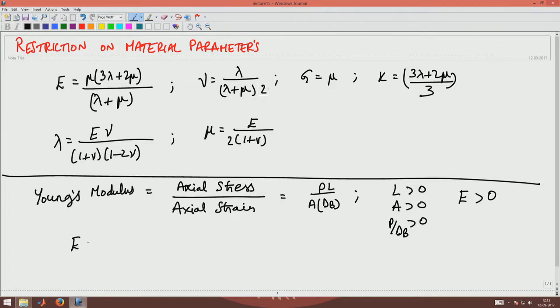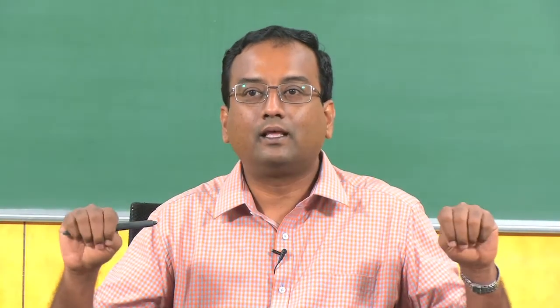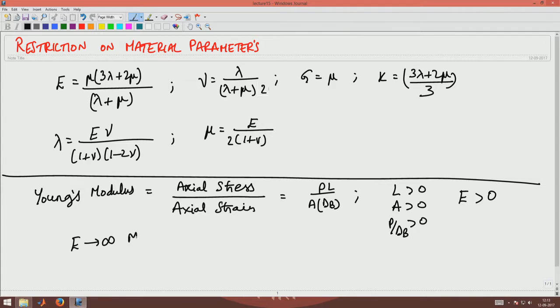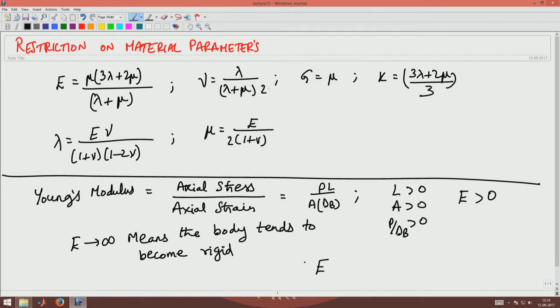The question is: can Young's modulus tend to infinity? If Young's modulus tends to infinity, it means that even though I am applying axial stress, tensile or compressive, there is no strain developed. That is the meaning of E being infinity — which is a rigid body. E tending to infinity means the body tends to become rigid; there is no deformation even though I am applying a force. Since in this course we are not interested in rigid bodies, we say Young's modulus has to lie between 0 and infinity — it cannot be 0 and cannot be infinity, so it has to be a positive number.